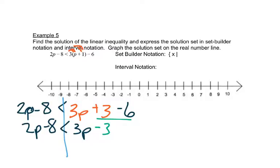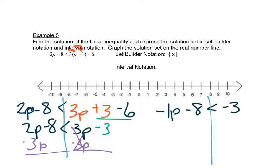And now we want to move our letters to the left. So we'll subtract 3p from both sides. So that would give us a negative 1p minus 8 is less than negative 3. We'd add 8 to both sides.